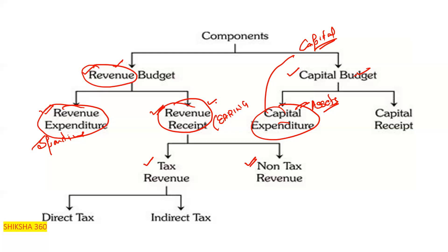Along with the tax, the government also charges fees on various transactions. Tax revenue is divided into direct tax and indirect tax. To summarize: Revenue Budget includes revenue expenditure and revenue receipts; Capital Budget includes capital expenditure and capital receipts. Under revenue receipts, we have tax revenue (direct and indirect tax) and non-tax revenue.